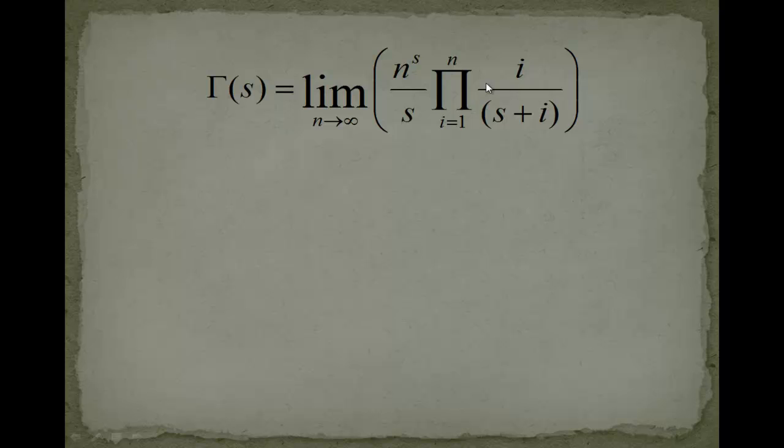We start with the Gauss representation of the gamma function, which looks like this. And then we divide with i here in this product. Here we get 1 and you get s over i plus 1.